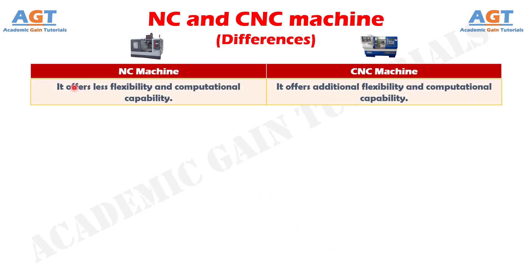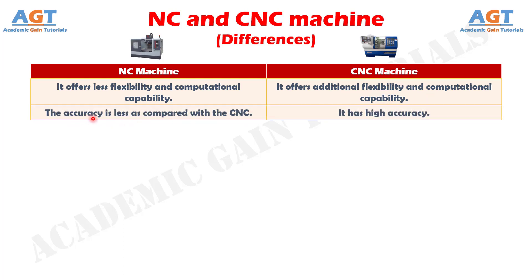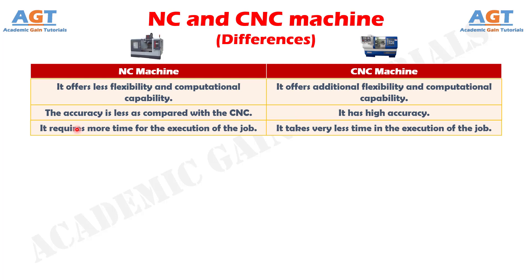Number 9. The NC machine offers less flexibility and computational capability, whereas CNC machine offers additional flexibility and computational capability. Number 10. The accuracy in NC machine is less as compared with the CNC, whereas CNC machine has high accuracy. Number 11. The NC machine requires more time for the execution of the job, whereas CNC machine takes very less time in the execution of the job.